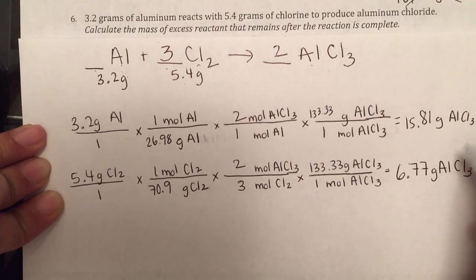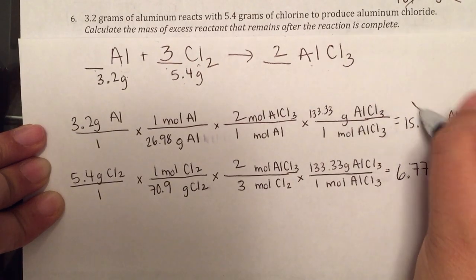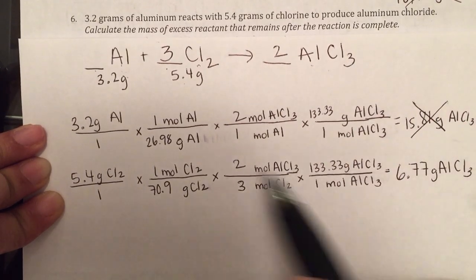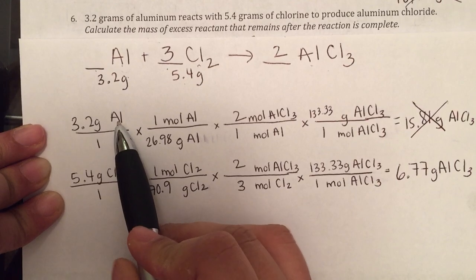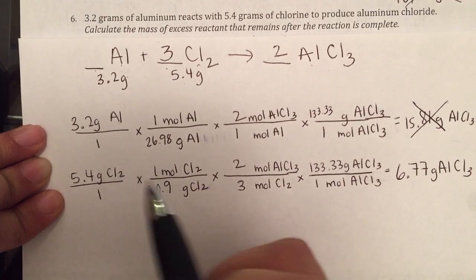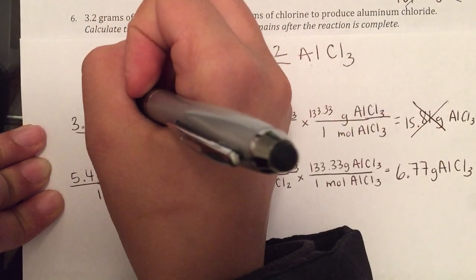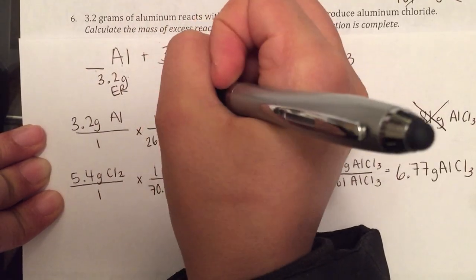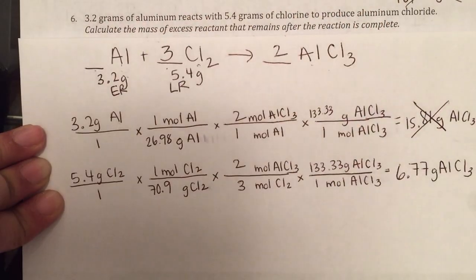So what does this tell us? This tells us that the excess reactant is aluminum, the limiting reagent is chlorine. So just for my own purposes, I'm going to write ER here and LR here to remind me which is which.